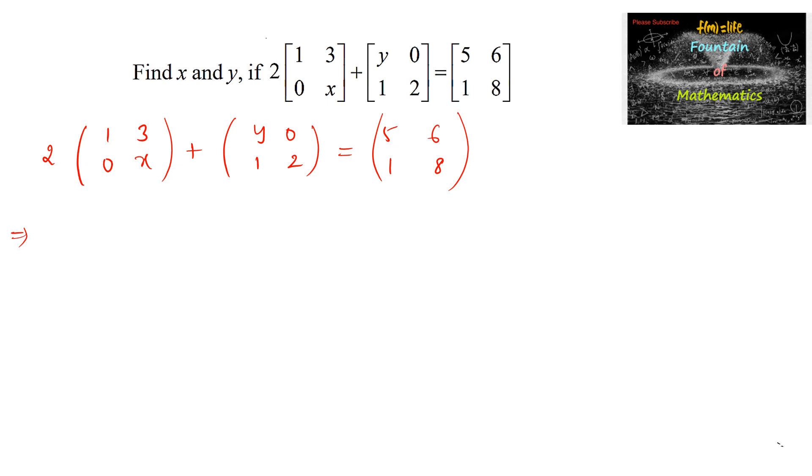So, which implies 2 times 1 is 2, 2 into 3 is 6, 2 into 0 is 0, 2 into x is 2x, plus matrix y, 0, 1, 2, which is given 5, 6, 1, 8.